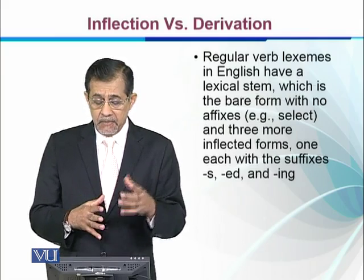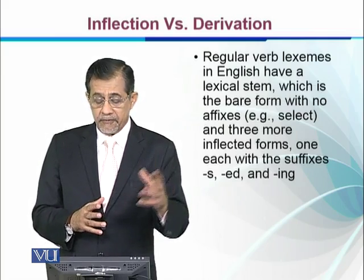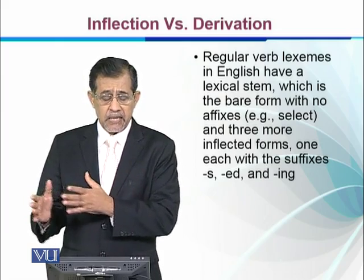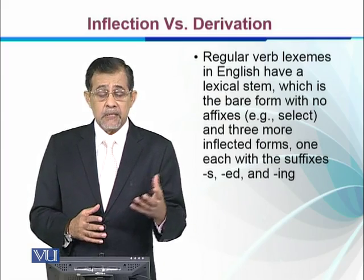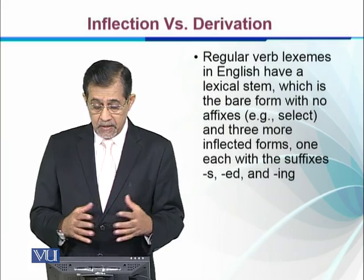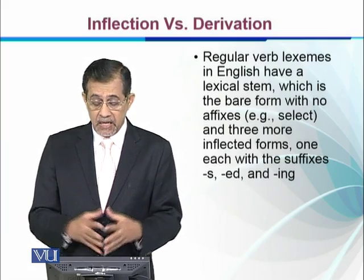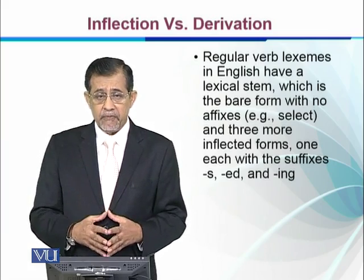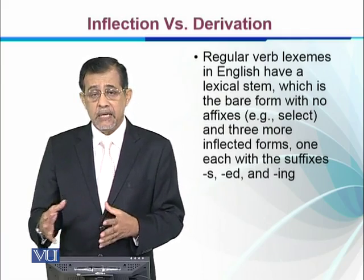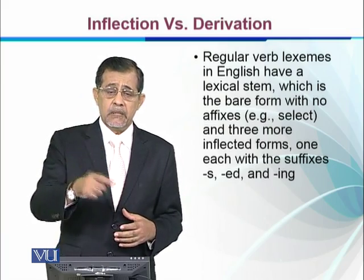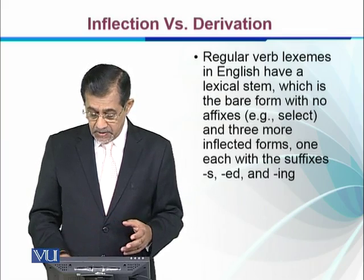Regular verb lexemes in English have a lexical stem, which is the bare form with no affixes — for example, 'select'. When we add affixes we get 'selected', and three more inflected forms: the suffix -ing to form the present participle, -s or -es for the third person singular, and the past form. These are the regular inflected forms for lexemes in English.